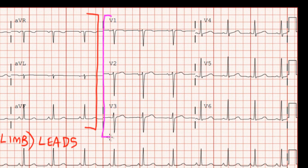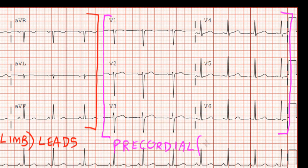Now the 6 leads on the right side of this tracing are called the precordial leads, or the chest leads. The precordial leads are derived from 6 electrodes that are placed on the chest wall, and they let us see what's going on in the anteroposterior plane.